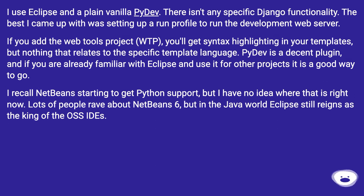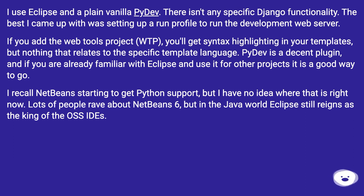I use Eclipse with a plain vanilla PyDev. There isn't any specific Django functionality. The best I came up with was setting up a run profile to run the development web server. If you add the Web Tools Project (WTP), you'll get syntax highlighting in your templates, but nothing that relates to the specific template language. PyDev is a decent plugin, and if you are already familiar with Eclipse and use it for other projects, it is a good way to go.